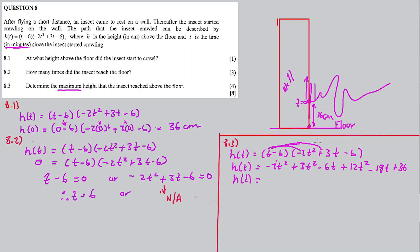We need to multiply out the brackets first. We expand the expression by multiplying each term — that times that, this times that — working through all the products so we can then differentiate term by term.